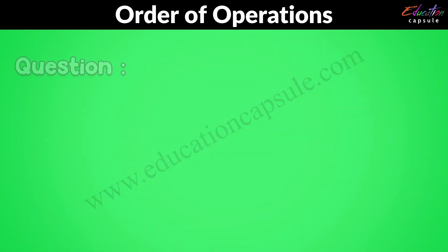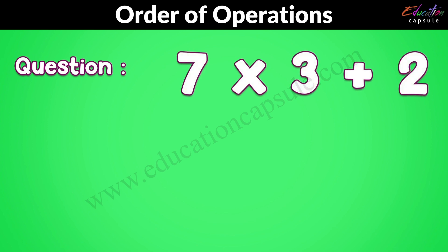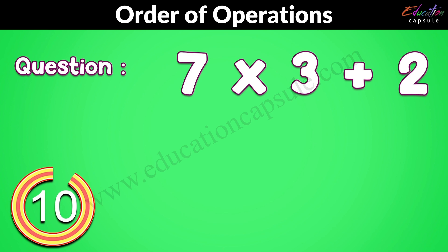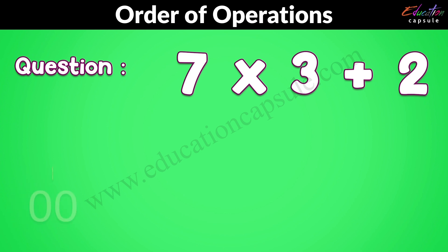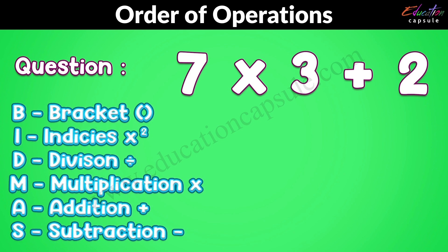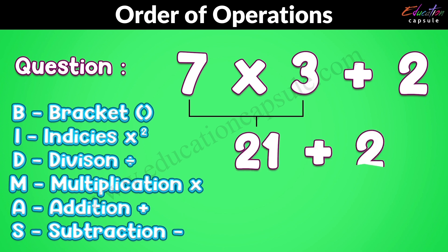Now you have 10 seconds to solve this question: 7 times 3 plus 2. According to BIDMAS, we will do multiplication first and then addition. So 7 times 3 is 21, and 21 add 2 is 23. The answer is 23.